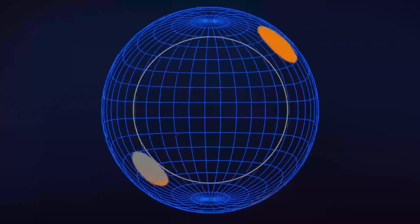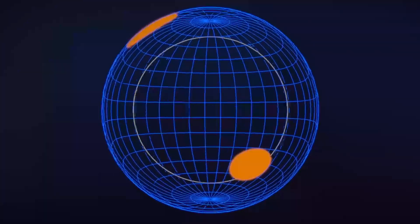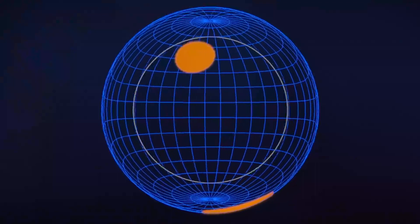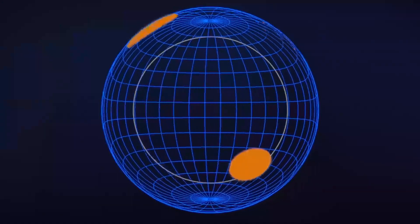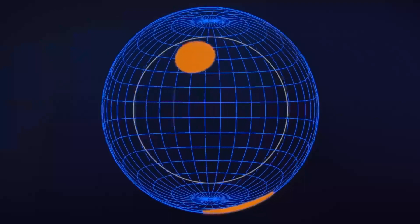Textbooks show pulsars with two hot spots on the surface, directly opposite each other at the magnetic poles. As the pulsar spins, the spots come in and out of view, creating regular changes in its X-ray brightness.